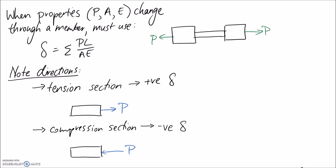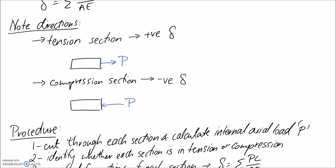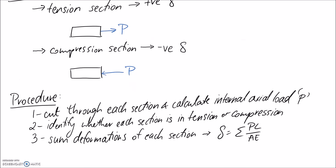Here is a procedure for analyzing these problems. First, cut through each section and analyze the internal axial load — this gives you the P in the PL on AE equation. Second, identify whether each section is in tension or compression, since that determines whether the deformation is positive or negative. Finally, sum all the deformations across your sections using PL on AE.